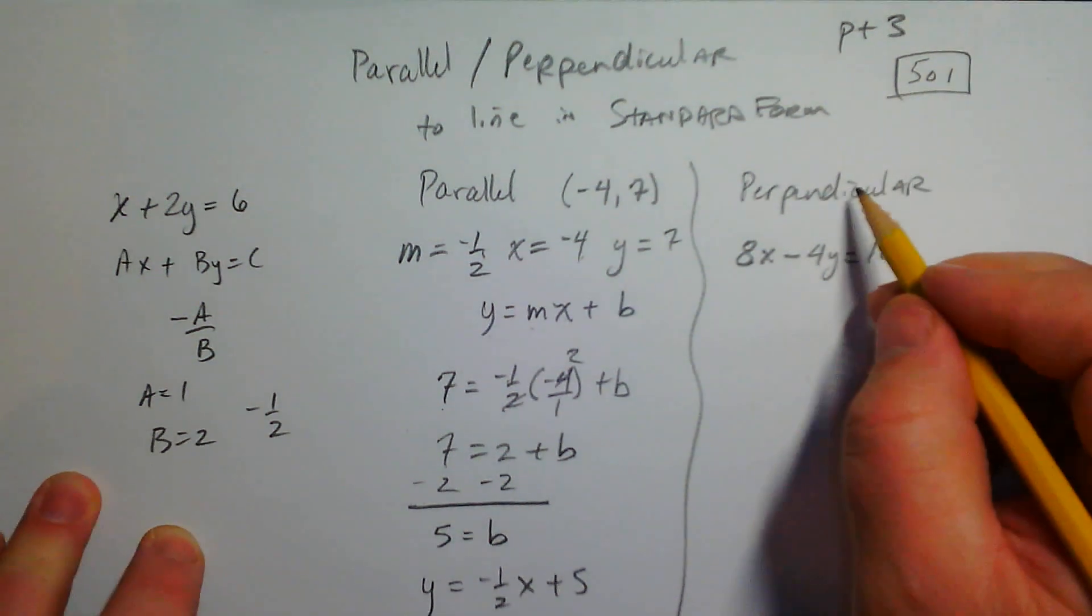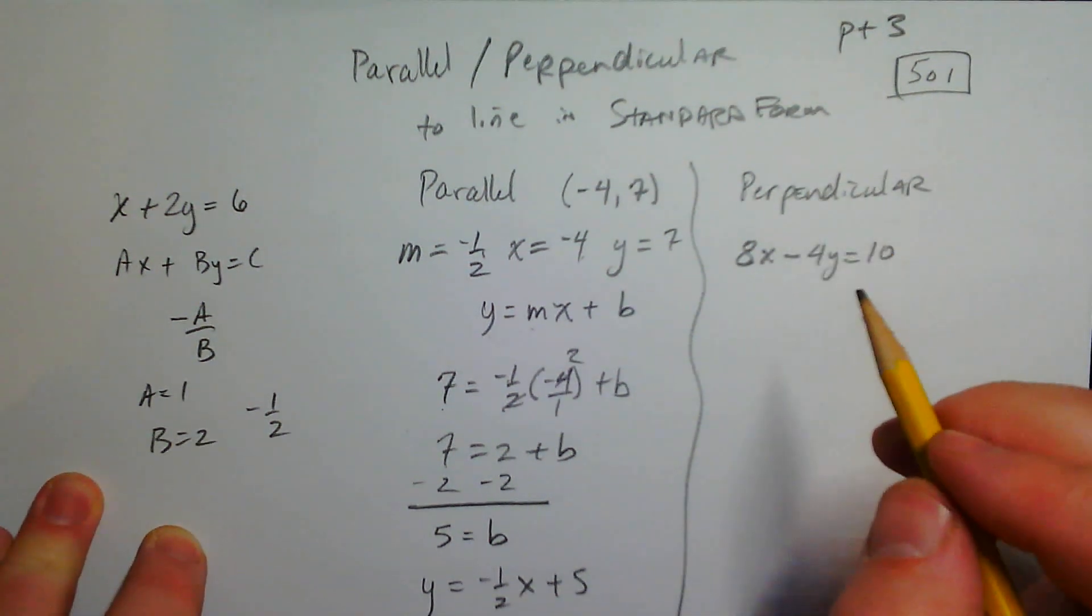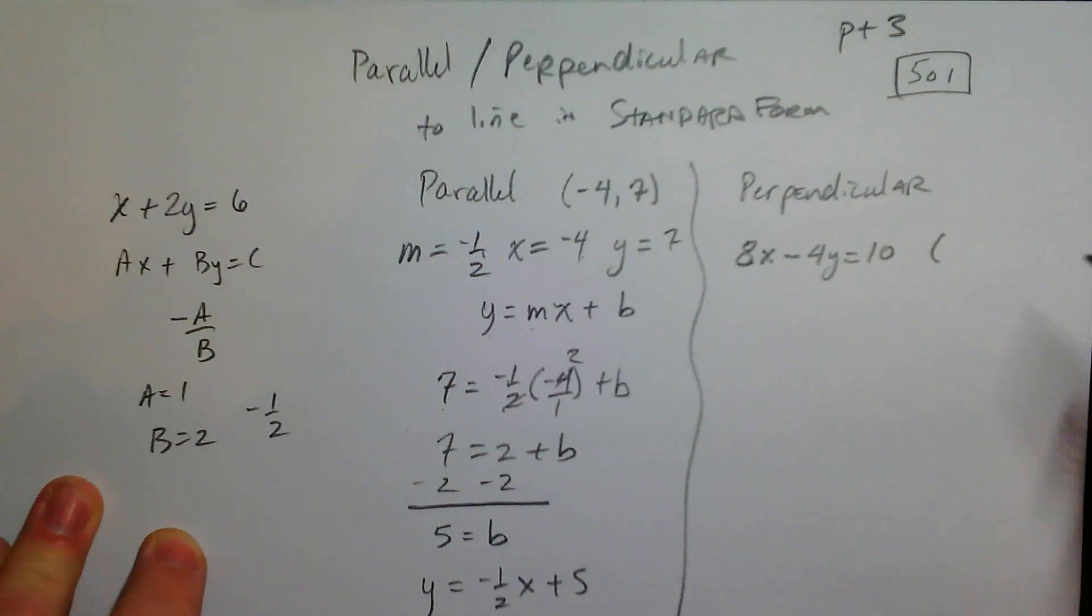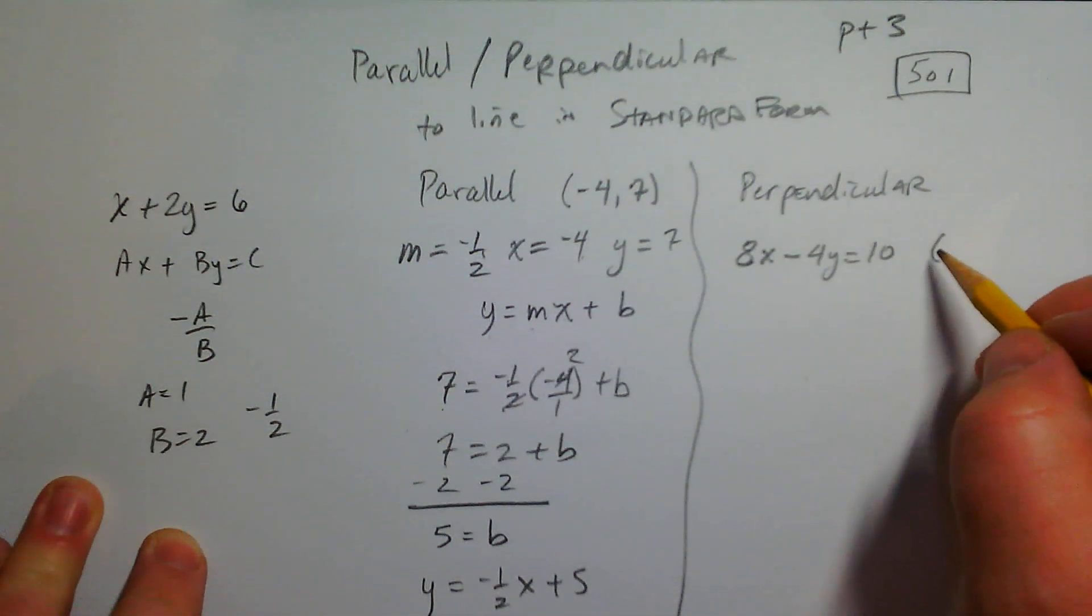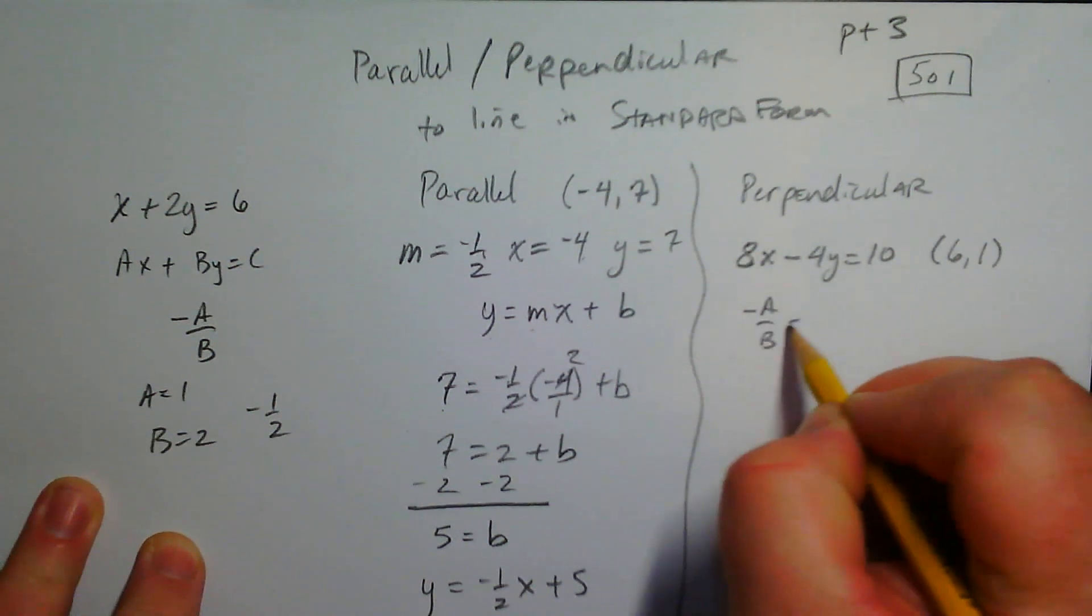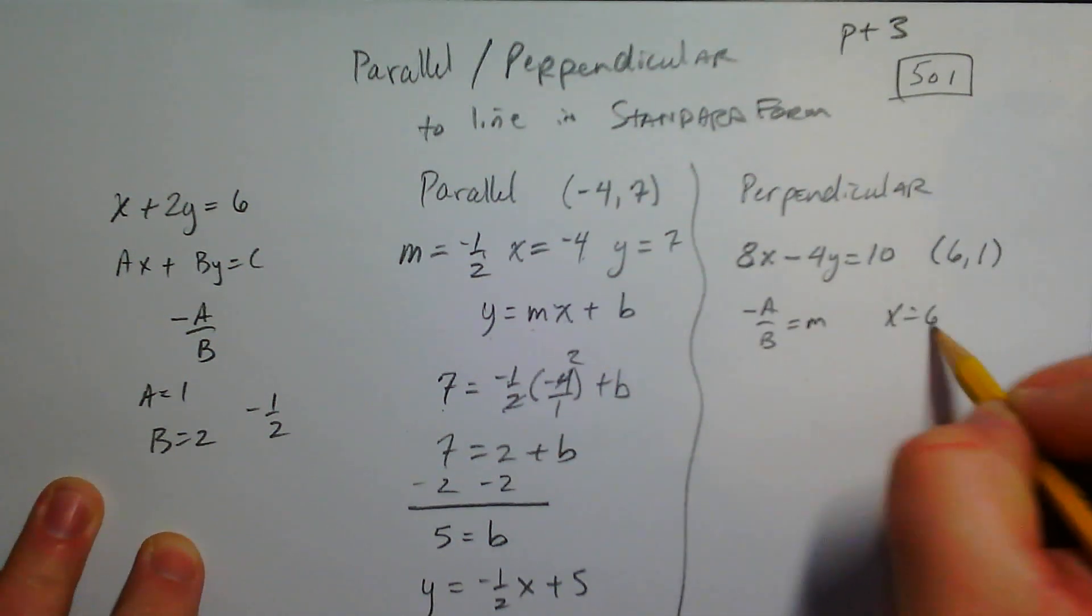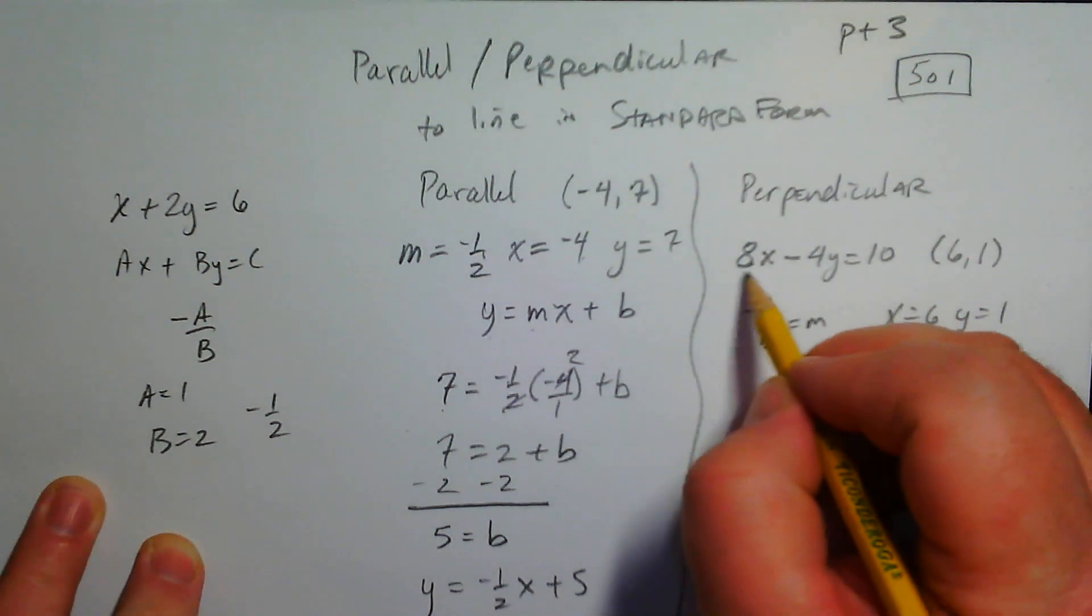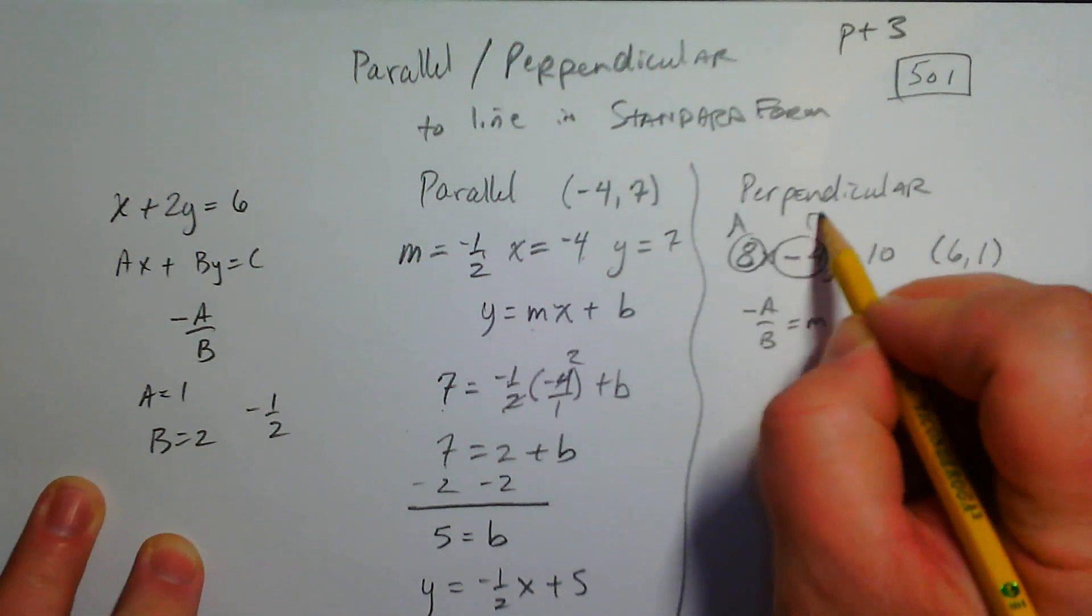And so let's say we need a perpendicular line that is perpendicular to this and passes through the point, how about 6, 1. So now, negative A over B is our slope, right? I know x is 6. I know y is 1. A here is 8. And negative 4 is B.